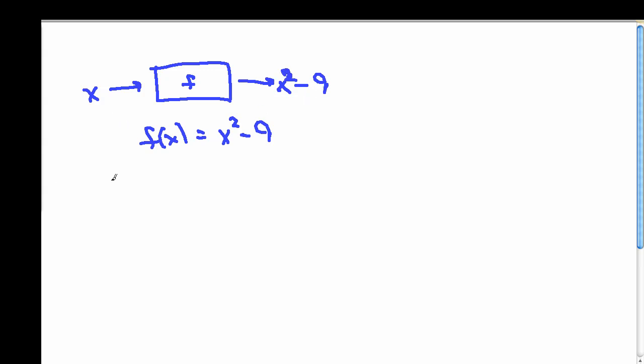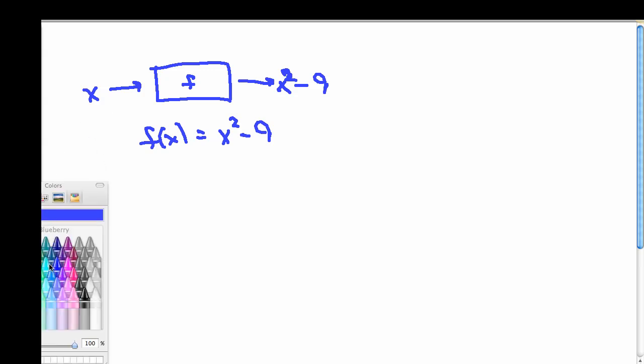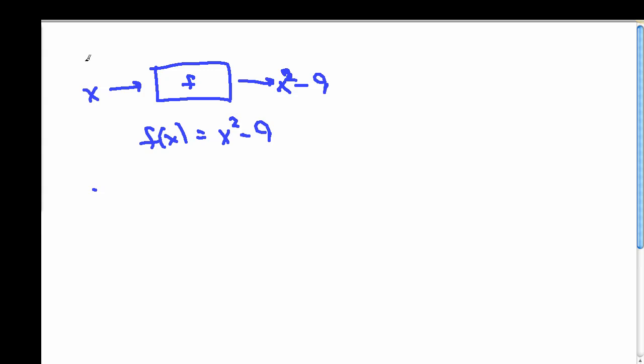So for example, if I were going to put in, let me change my color here, let's say to red. If I were going to put in a 3 into this function, well, I put this in, and f of 3 would be 3 squared minus 9, and that's equal to 0. So we'd say that f of 3 equals 0. That's the output I get when I put in a 3.